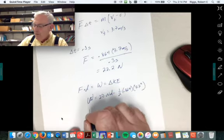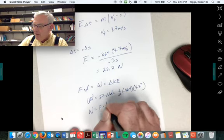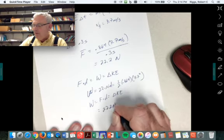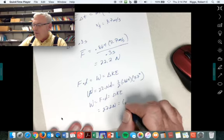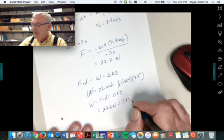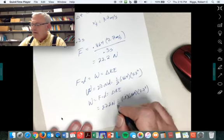This is the work, so the work is equal to force times distance, which equals to twice here. 22.2 newtons is equal to 0.5, that's my one half, times 0.864 times the distance.